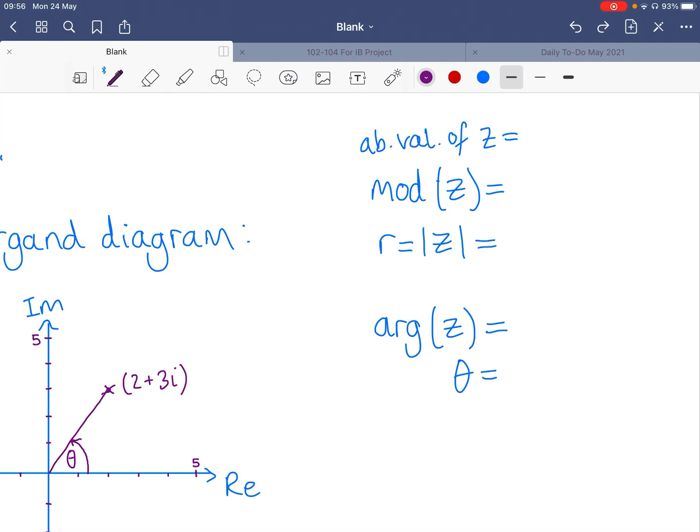We could call it r and we can have this absolute value notation. So you probably see these final two the most often. But yeah, you can just refer to it as mod z.